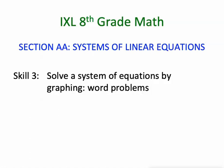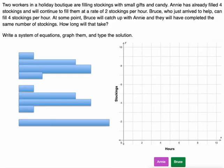Hello, Mr. Kaczynski here. I've got some 8th grade math from IXL. Section AA is Systems of Linear Equations. Today we're moving into Skill 3 where we're going to solve a system of equations by graphing, which is exactly what Skill 2 was, but today we're going to work some word problems into it. Four quick examples that should help you get through this skill here today.